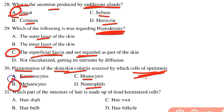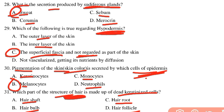Which part of the hair is made up of dead keratinized cells? The options are root, hair follicle, shaft, and bulb. The answer is the hair shaft — it is composed of dead keratinized cells.